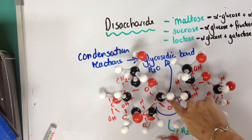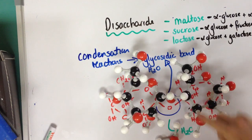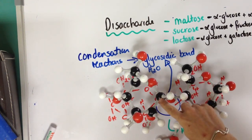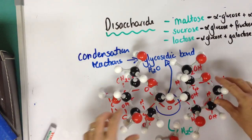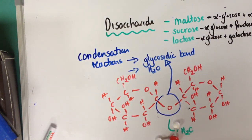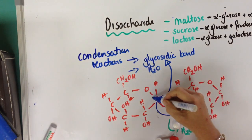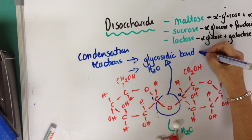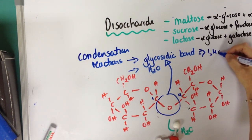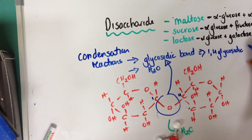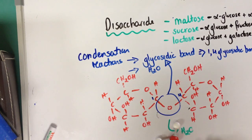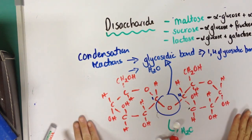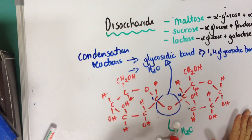This bond is sometimes called a 1,4 glycosidic bond, because the bond has been formed between carbon 1 and carbon 4. Now you've seen what monosaccharides and disaccharides are — you need to make notes from the presentation and work through the question sheet.